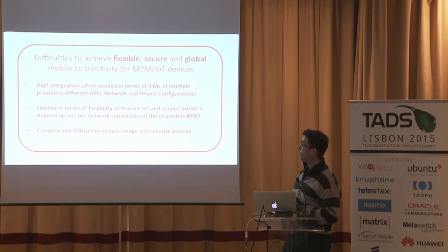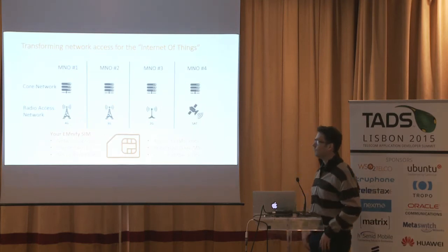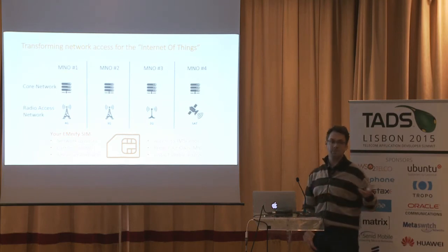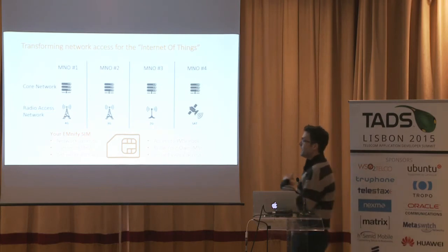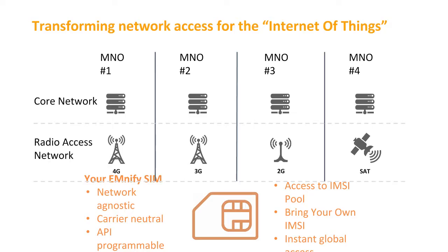To overcome these problems, at Ennify we did two things. First, we provide you with a SIM card that becomes your SIM card — it's no longer owned by a specific operator. It's a network-agnostic, carrier-neutral SIM card, not bound to a specific home operator. It's API-programmable, meaning you as a developer can reprogram the profile on the SIM card and have full control over it. You get access to an IMSI pool — the IMSI is the identity on the SIM card that allows you to log into a network — sourced from different mobile operators all around the world.